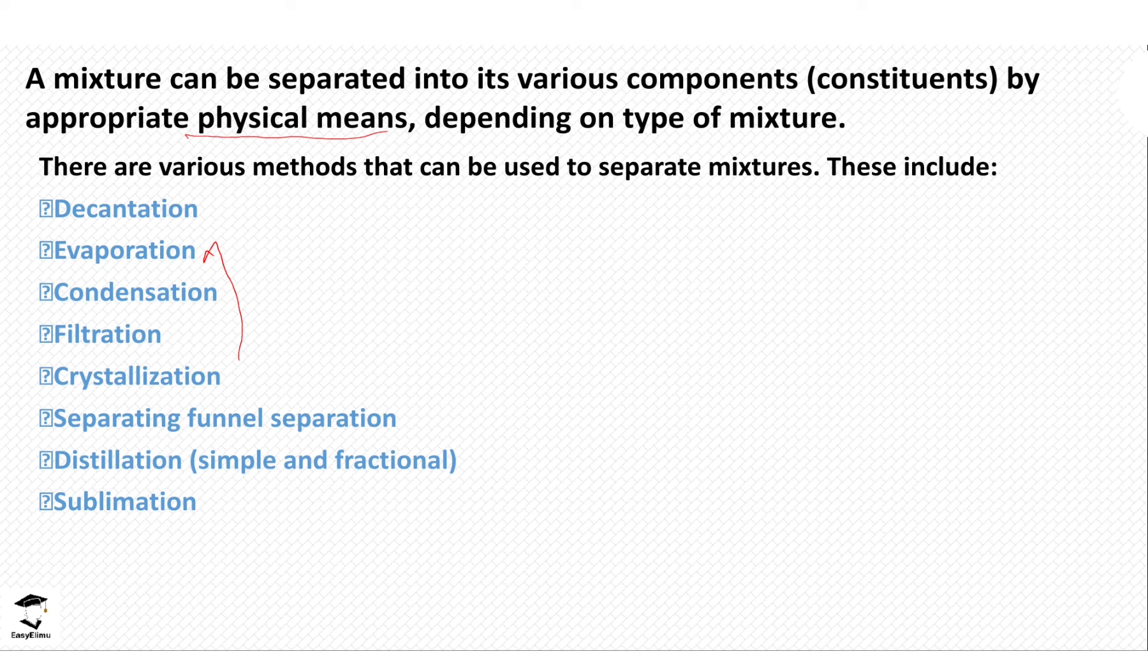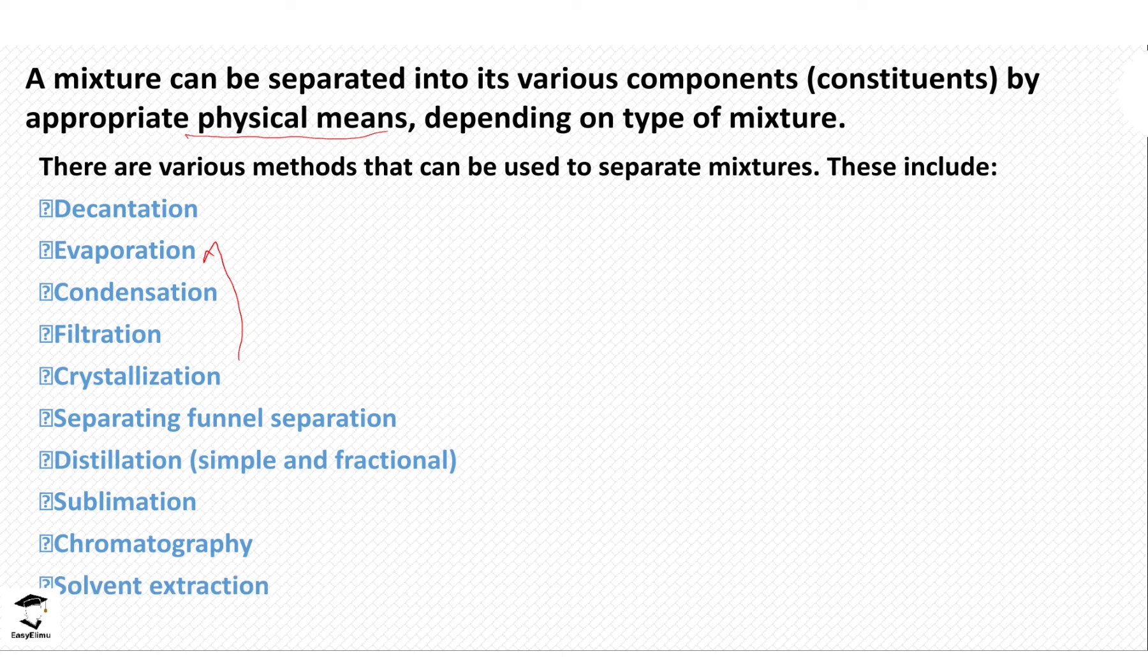And then we have sublimation which involves separating a component that sublimes as well. And then we have chromatography. Chromatography will be the separation of colors. And finally we have solvent extraction which we are going to use to separate different components and we are going really to especially look at how to separate oil from nuts and seeds. So those are some of the methods that we are going to be discussing in this topic.